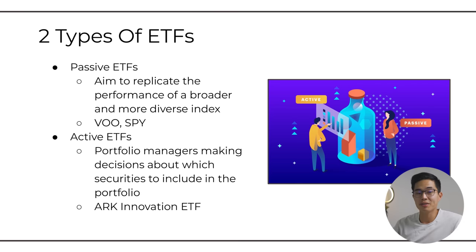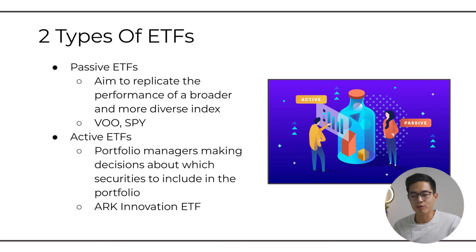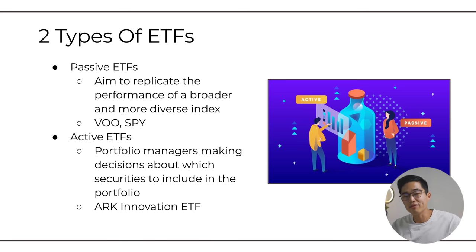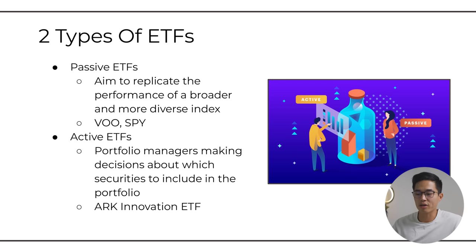There are two main types of ETFs I want to cover: passive ETFs and active ETFs. I'll be steering you guys more towards the passive ETFs since the costs to own them are much less. These are aiming to replicate the performance of a broader or more diverse index — for example, the S&P 500. There are ETFs that actively track and try to mimic the S&P 500, so when you buy one share of that ETF, you're basically investing in the whole S&P 500. Two very popular ones are VOO and SPY. Active ETFs have portfolio managers making decisions about which securities to include — a very famous example is the ARK Innovation ETF.